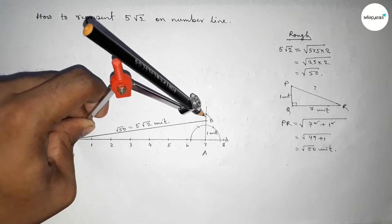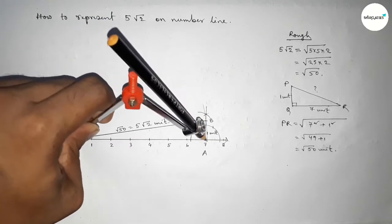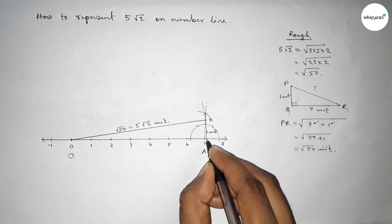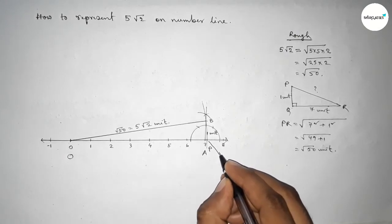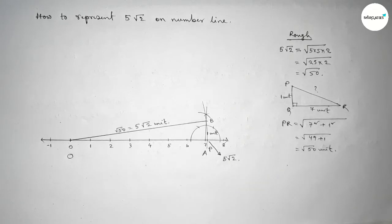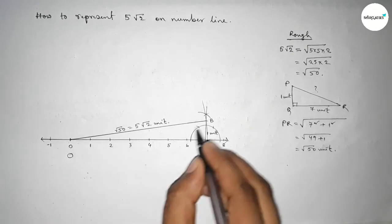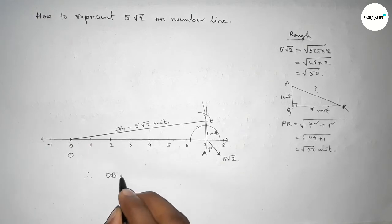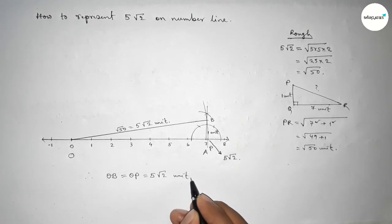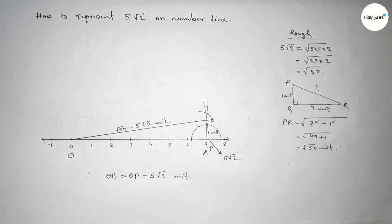Drawing here an arc which meet the number line at a point here. So this is taking point P and this is 5√2 on number line. Therefore distance OB and OP are equal, so equal to 5√2 unit.